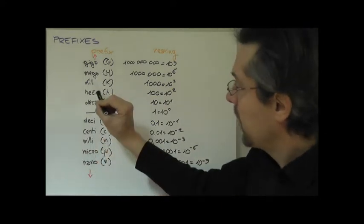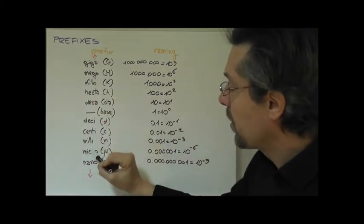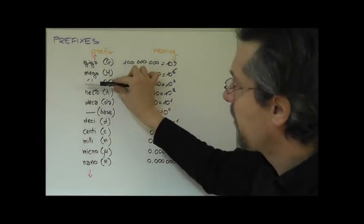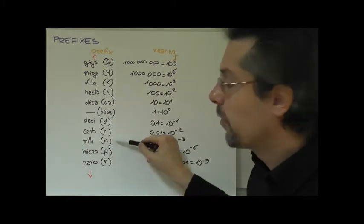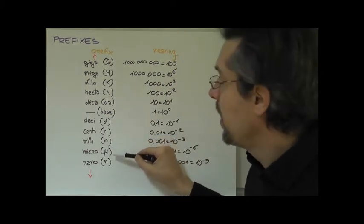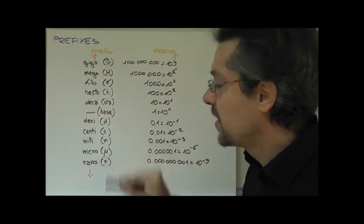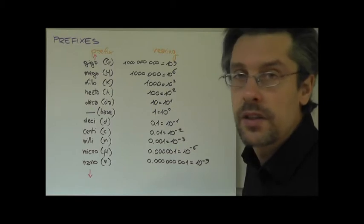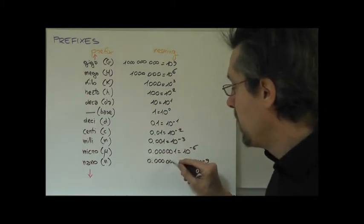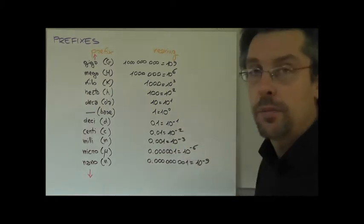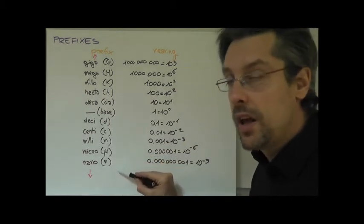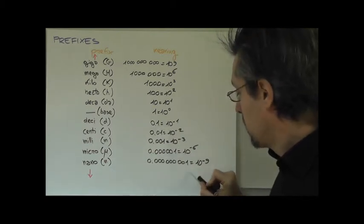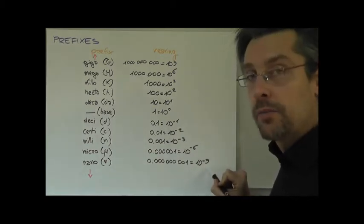And then again, as we had here, after 1000 we go by steps of 3. Here we went from 1000 to a million, here we go from 1 thousandth to 1 millionth, and that is the micro. And the symbol is a Greek letter, the Greek letter mu, and it's this symbol here. It stands for 1 millionth, or 10 to the power of minus 6. And then we go to a billionth, and that's the nano, symbol N, or 10 to the power of minus 9.